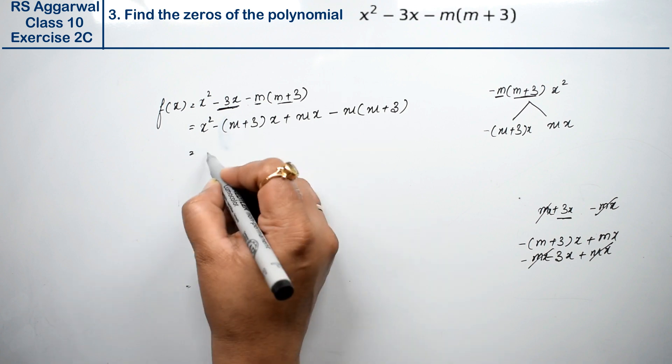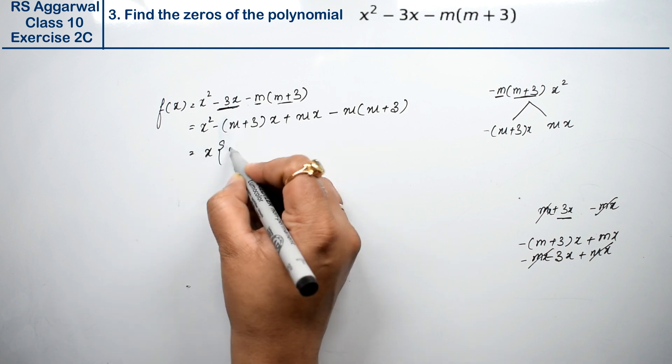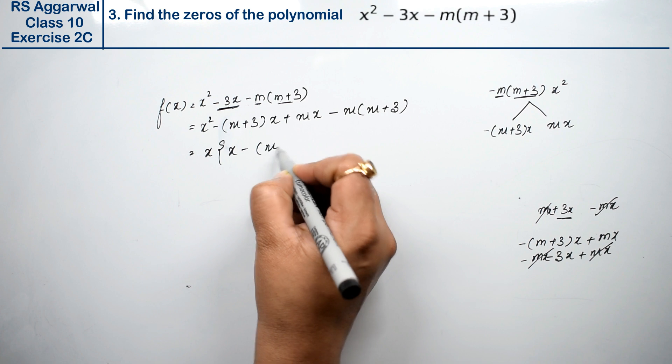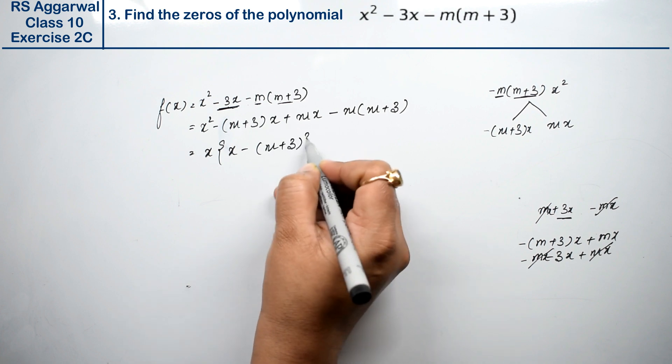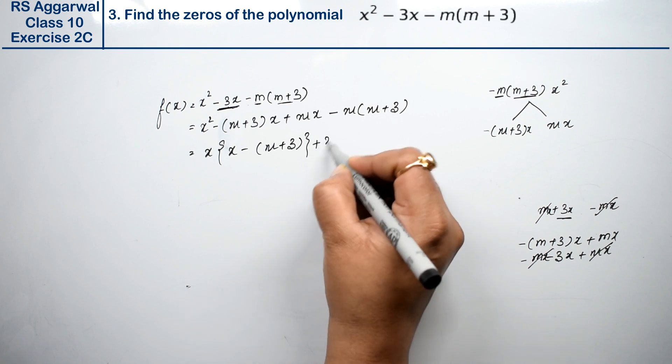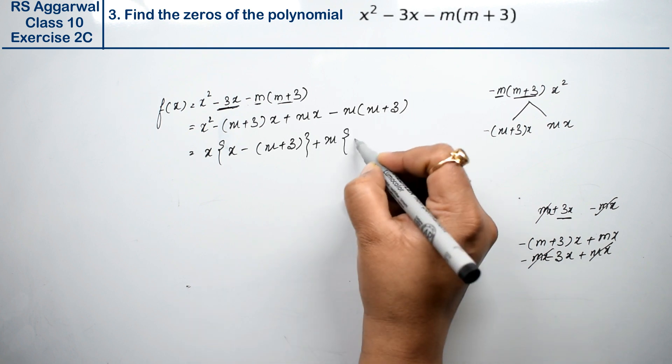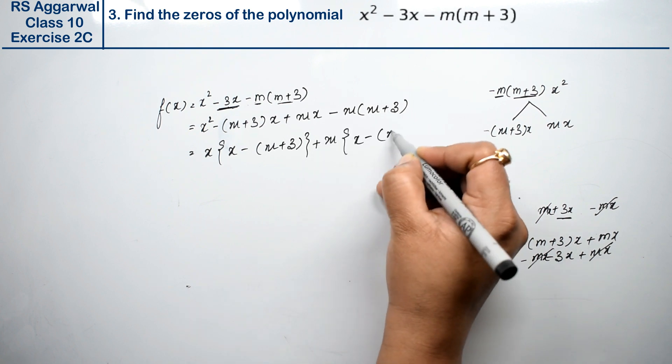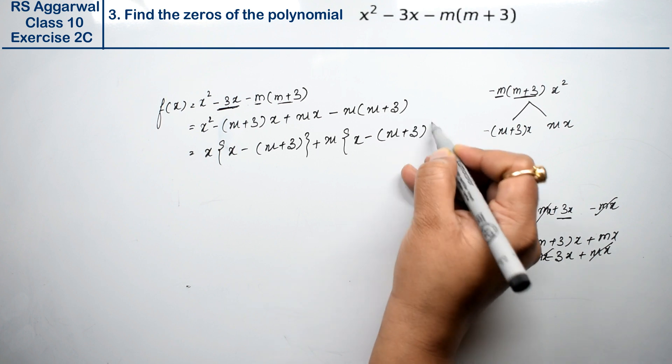From these two, x came common. So x common came. What remained? x minus (m + 3) remained. And from these two, m came common. Plus m common came. What remained? x minus (m + 3) remained.